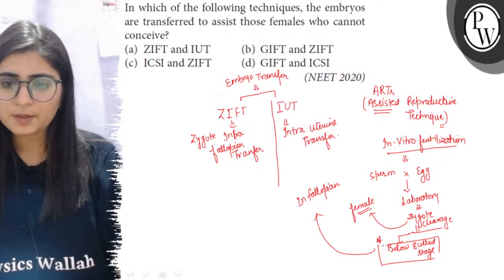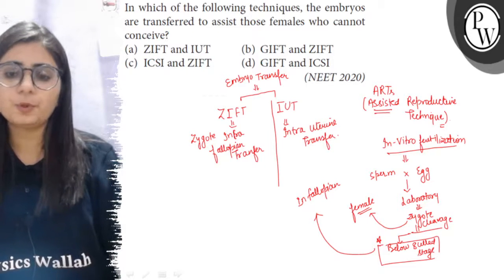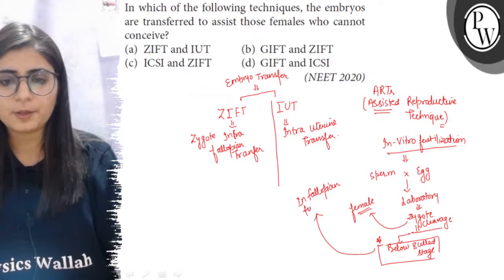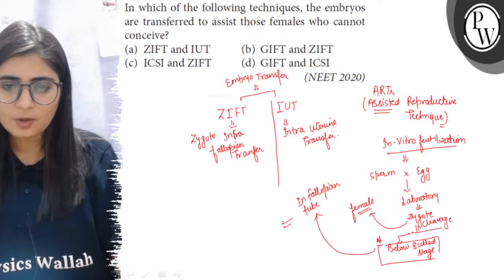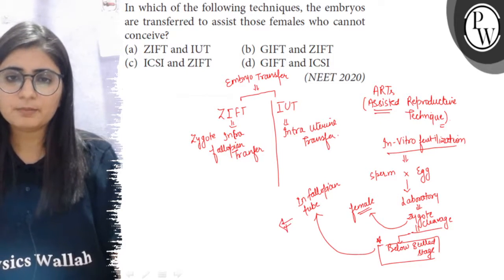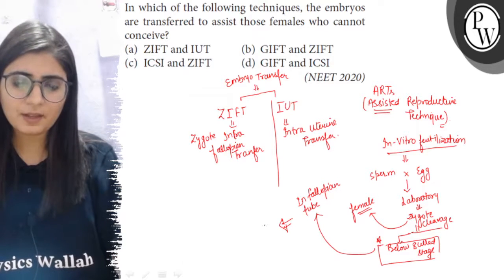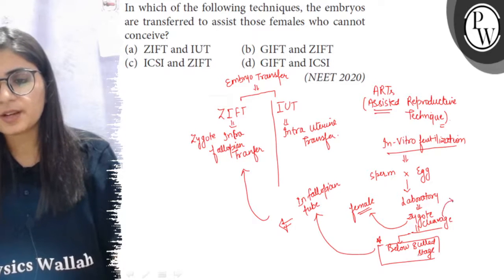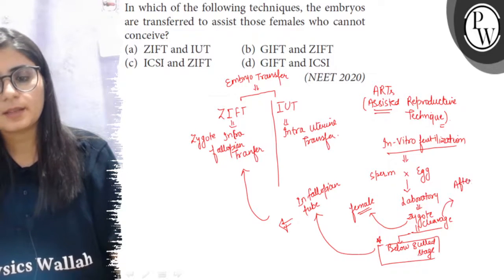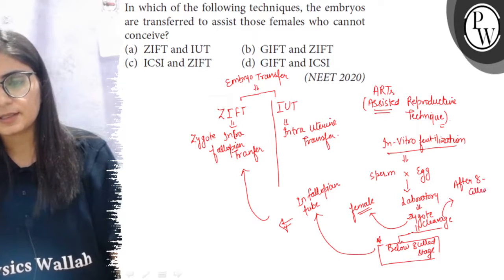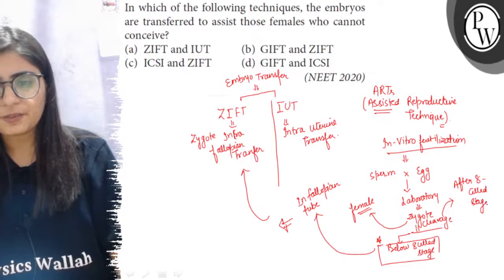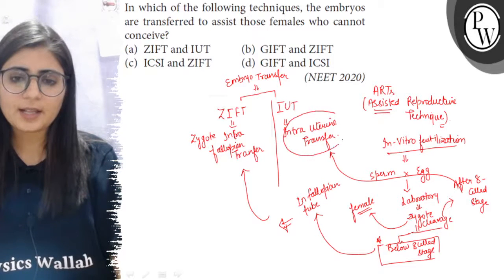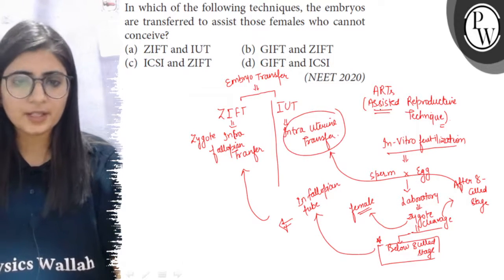If the embryo is at or below the 8-cell stage, it is transferred into the fallopian tube, and this technique is known as ZIFT. If the embryo is beyond the 8-cell stage, it is transferred directly into the uterus of the genetic or surrogate mother, and that technique is called Intra-Uterine Transfer, or IUT.